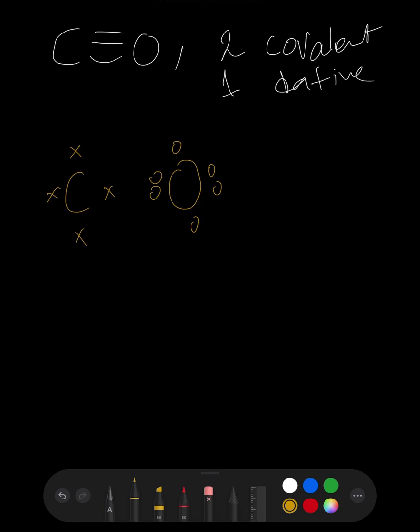It says that we have two covalent bonds. What does this mean? It means that these two electrons will be shared together and these will be shared together. What will happen after sharing these electrons? Let's redraw it.